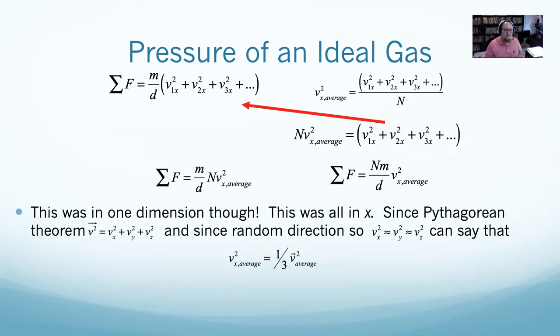The average velocity squared is the sum of the velocity squared over N. If I take an average of N numbers, I add them up, divide by N. The average velocity in X squared will be the average velocity in 1 squared plus 2 squared plus 3 squared plus 4 squared divided by however many I got. I'm going to multiply both sides by N and then shove that into this guy, giving me this equation. This was only one dimension. There should be three dimensions.